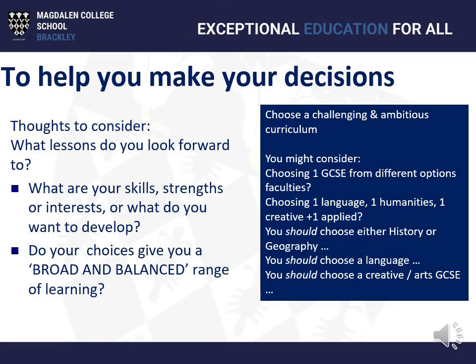It might be that you kick out one or two subjects you know you don't want to do, keep in one or two you definitely want, and then look at the middle ones and think: what gives me the best broad and balanced range? Which fits better with my other choices? You might consider choosing from different option faculties — one from humanities, one from social sciences, one from ADT, one from languages. For example: one language, one humanities, one creative, one applied like business studies.